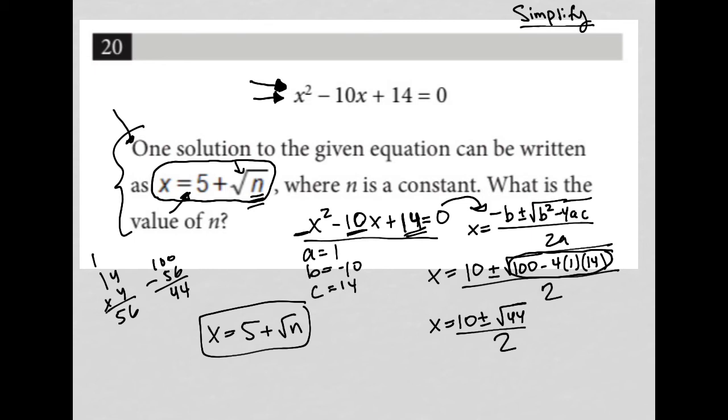I can simplify this root 44. 44 is the same as the square root of 4 times the square root of 11. The square root of 4 is just 2, which means the square root of 44 is the same as 2 root 11.